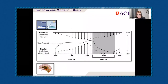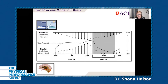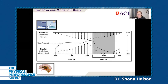I've got two sciency slides before we get into the fun stuff. It's important to understand the two-process model — the way sleep works. There are essentially two things that cause our drive to sleep. There's a homeostatic drive and a circadian drive. The homeostatic drive is simply how long you've been awake — the longer you've been awake, the more drive to sleep you have. That's why if we nap too long, too deep, or too late in the day, it decreases that propensity to sleep.